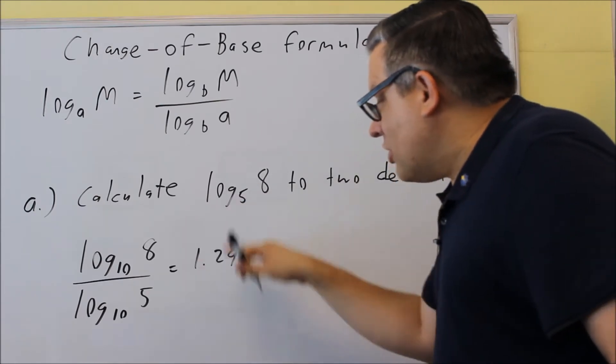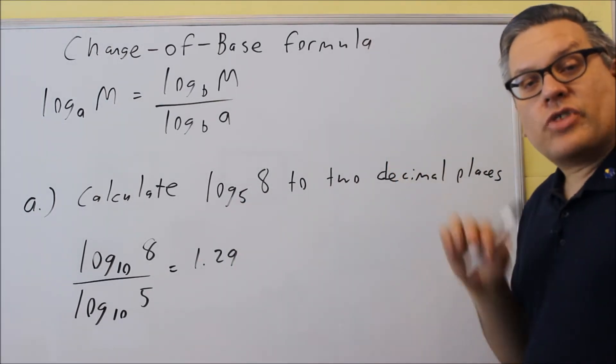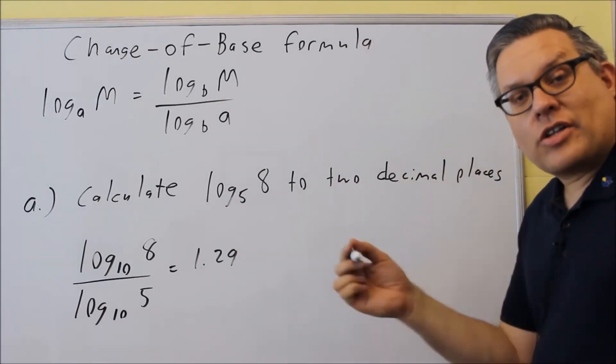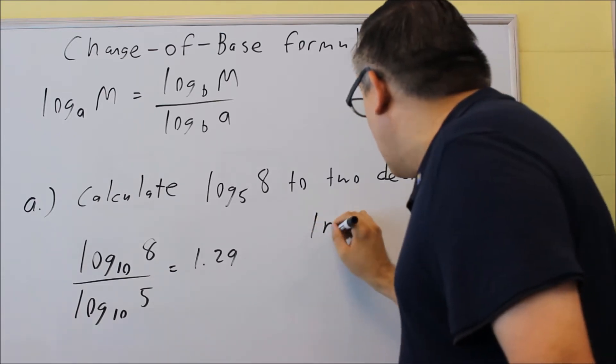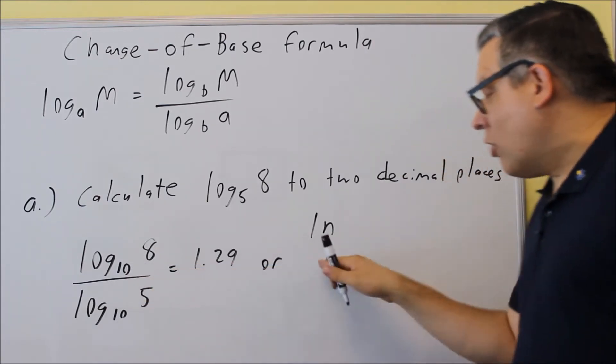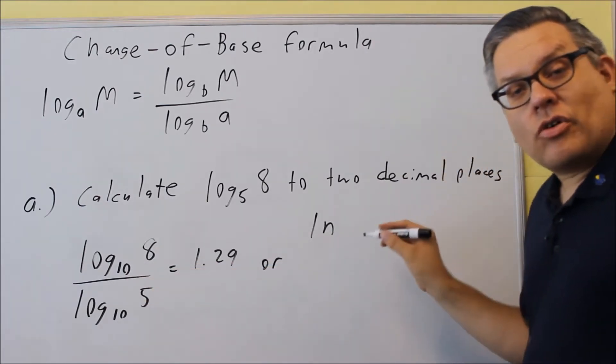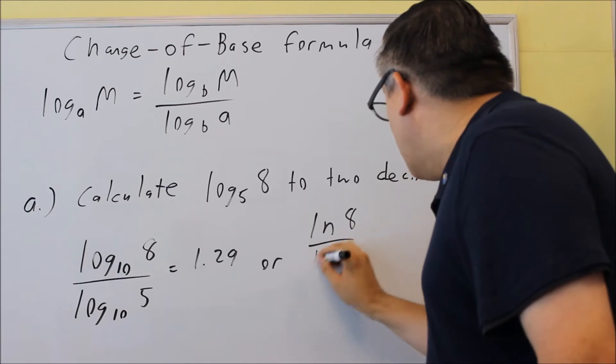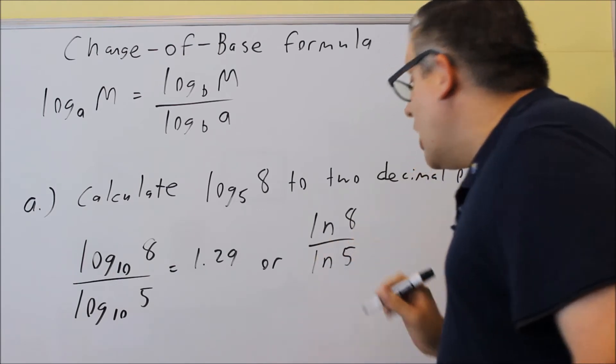Now, if I chose to not use LOG and I want to use LN instead, my natural log, that's a log base E, I could do that as well. So basically I have two different ways of calculating that. I could use this or I can use LNs. So a natural log of 8 divided by natural log of 5.